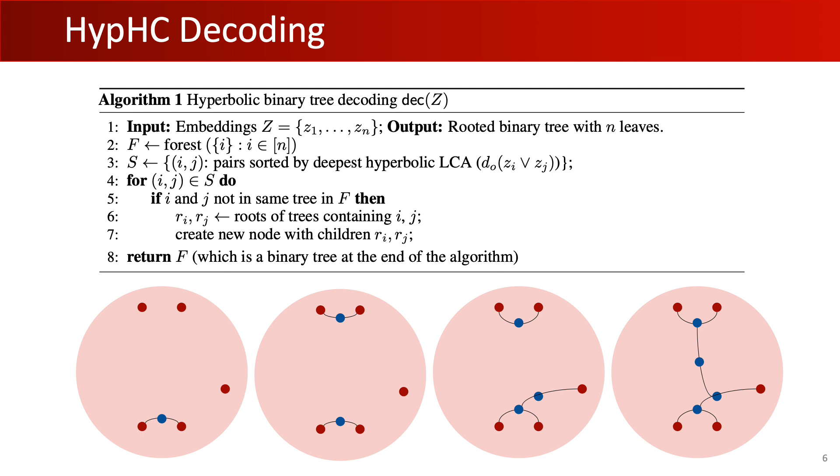Finally, the last step of HypHC is a decoding algorithm that maps leaves embeddings to a binary tree with low distortion. The algorithm starts by computing all pairs of LCA distances to the origin. It then recursively merges pairs and subtrees based on their hyperbolic LCA distance to the origin. Pairs that have LCA further from the origin get merged first.